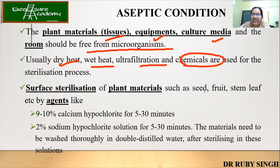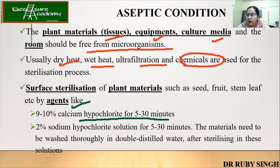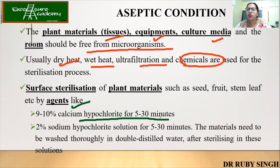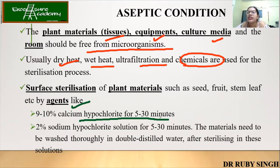Surface sterilization of plant materials such as seed, fruit, stem, leaf, etc. is done by agents like 9 to 10% calcium hypochlorite for 5 to 30 minutes. Now the question should come: why can't we do surface sterilization of plant materials by boiling? This can be an interview question. If you use the boiling method, the plant material will die — at boiling temperature the cell is not going to survive. After boiling, if cells are dead, there is no point carrying out the experiment because they cannot regenerate into a new whole plant. That's why you don't use boiling for sterilization of plant materials; instead, we use surface sterilization.